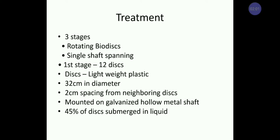This is an overview of the RBC. The treatment includes mainly three stages: rotating bio-discs and a single shaft spinning. In the first stage, 12 discs are used. Each disc is lightweight plastic with a diameter of 32 centimeters. They have a two-centimeter spacing from the neighboring discs, mounted on a galvanized hollow metal shaft, with 45% of each disc submerged in the liquid.